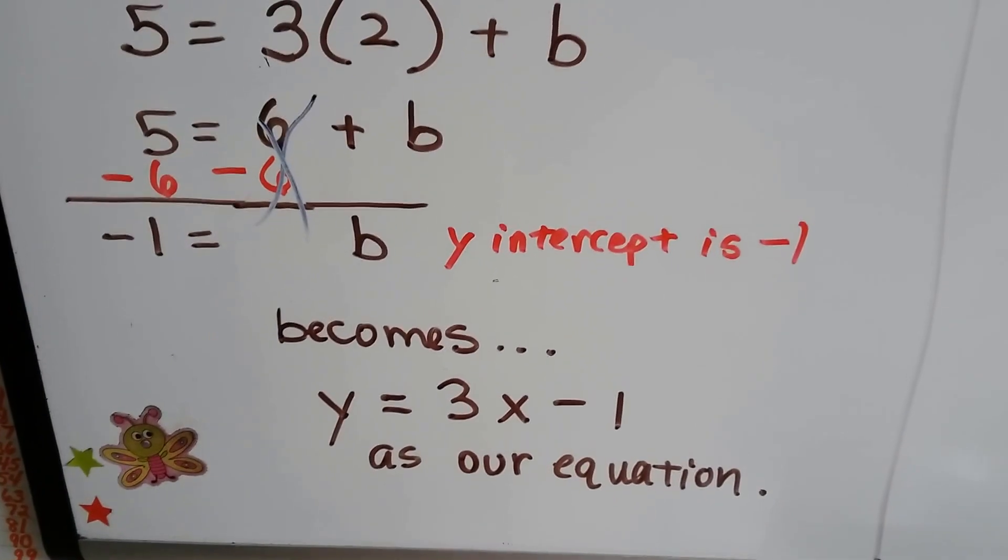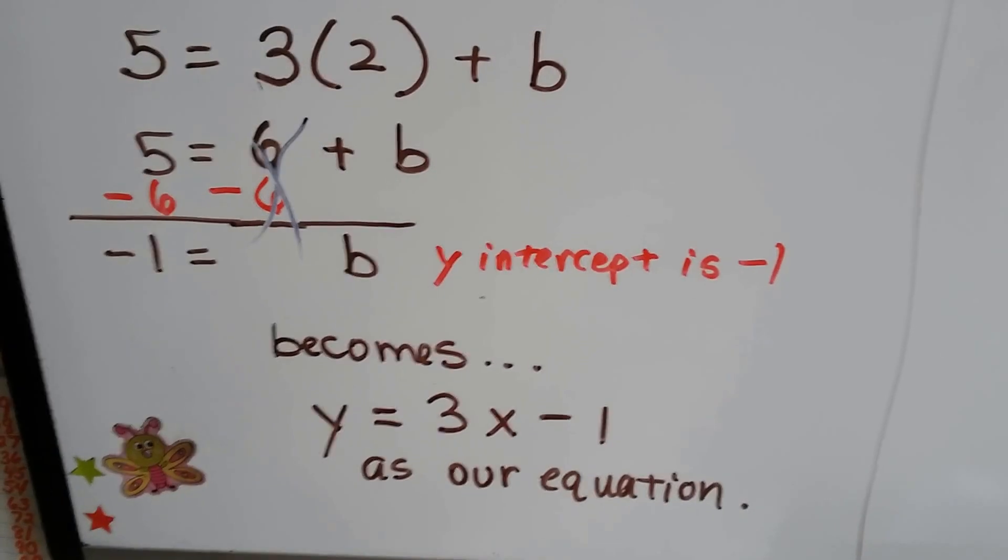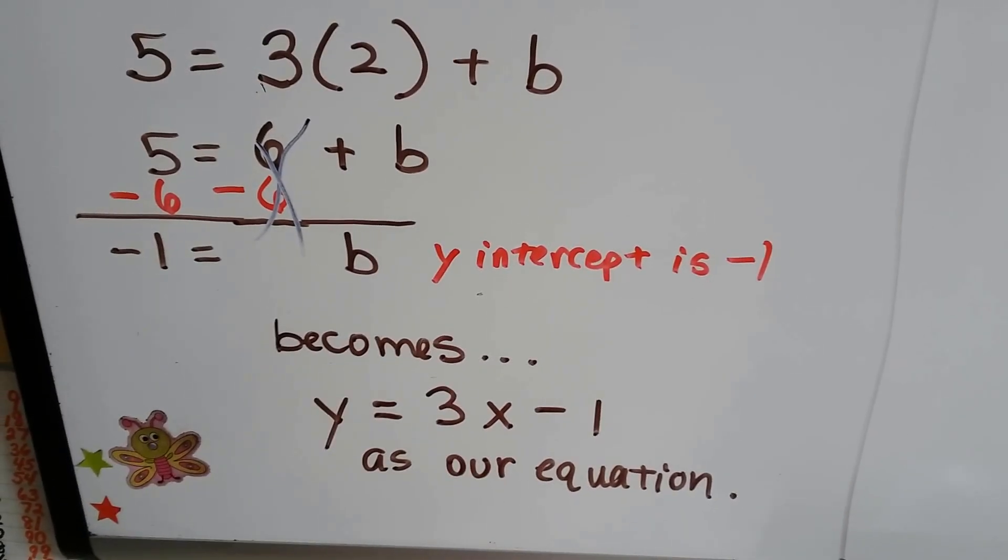Now we can write the equation. y equals 3, because that's our slope, x minus 1. And this equation will fit any point on the line.